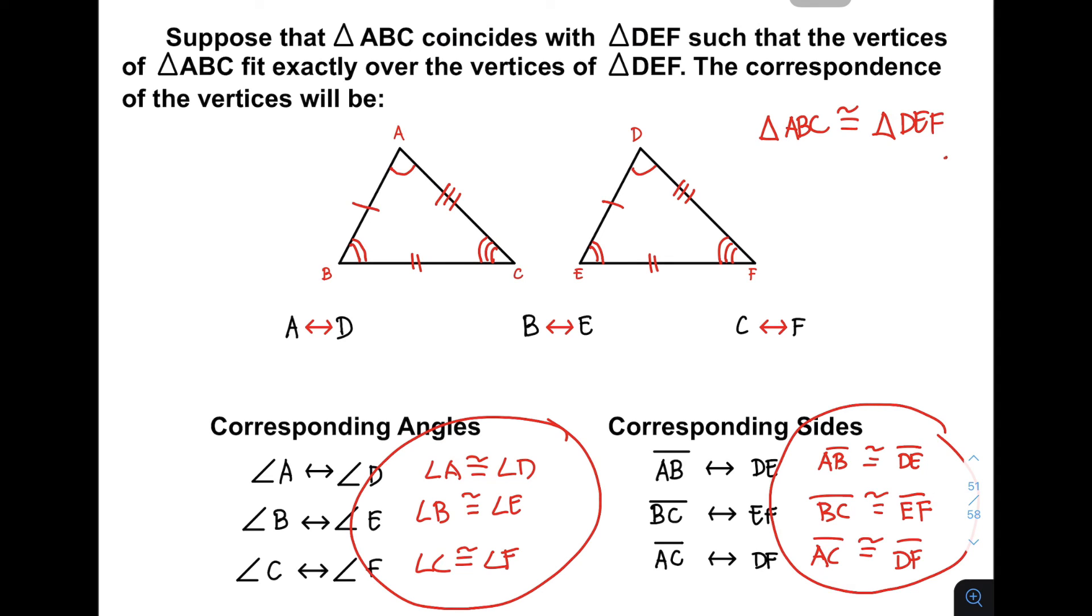Remember, in writing a congruency statement of a figure or any triangle, the arrangement of the letters is very important. So we have here ABC that corresponds to DEF. Again, the two triangles are congruent if these six pairs of corresponding parts are evident.